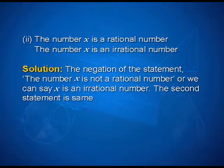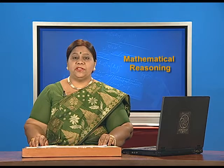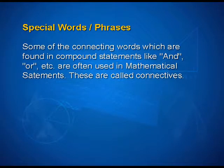Look into the second one. The number x is a rational number; the number x is an irrational number. The negation of this statement is 'the number x is not a rational number,' or we can say x is an irrational number. The second statement is the same. Therefore, both are negations of each other.